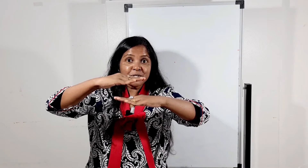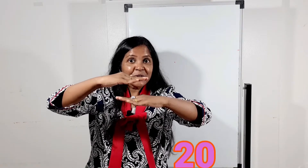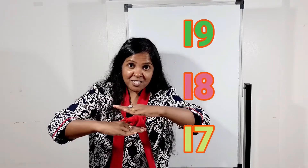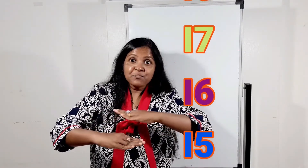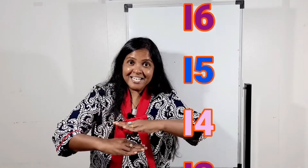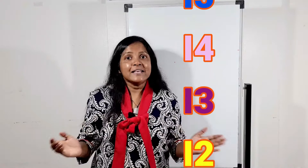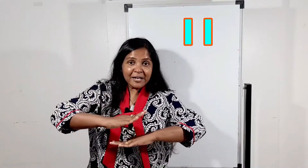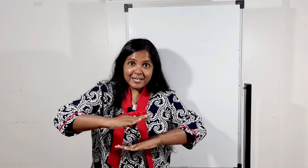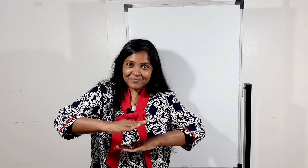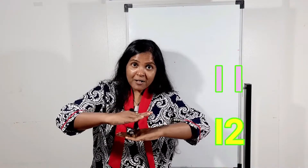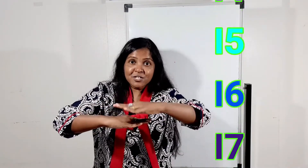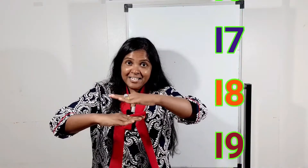Now our hands are up. Again we will count down. Now it's 20, 19, 18, 17, 16, 15, 14, 13, 12, and 11. One more time — take your right hand up and left hand down. Now we are going to count: 11, 12, 13, 14, 15, 16, 17, 18, 19, 20.